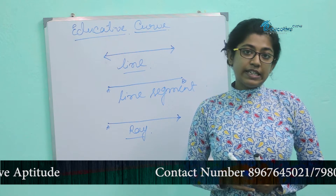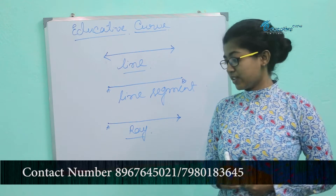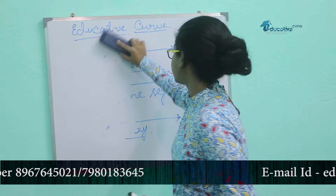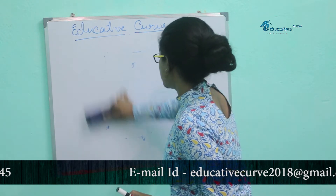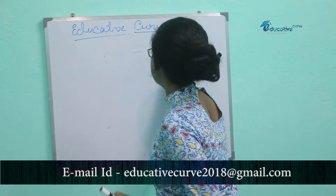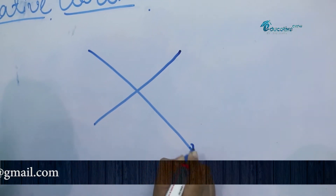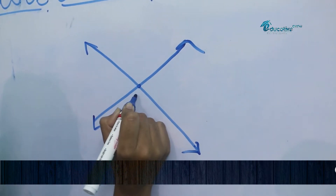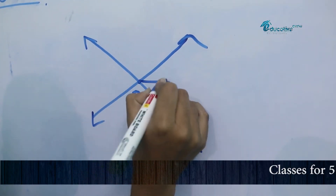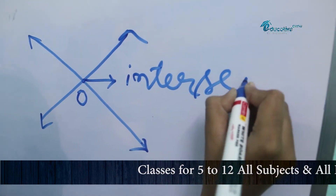Now we will discuss intersecting lines and non-intersecting lines. What are intersecting lines? When two lines cross each other, that is called intersecting lines. Lines AB and CD intersect at the point O — it's called intersecting lines.